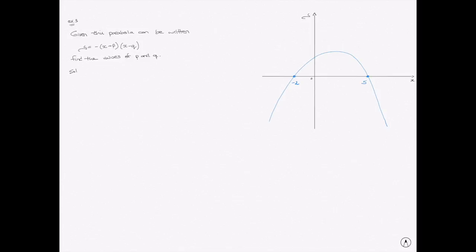Well, in this case, I'd like to draw everyone's attention to the fact that it's a plus p here. Now, let's see why that is. Looking at this function's x-intercepts, I can see that it cuts the x-axis at x equals negative 2 and x equals 5.